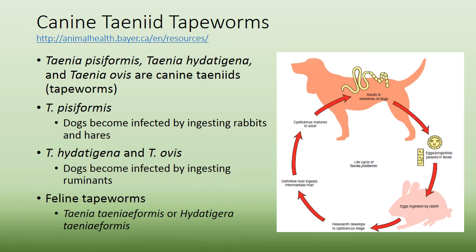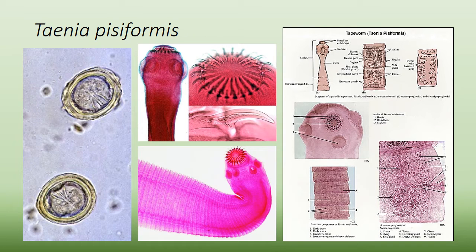As for Taenia, there are different types. The intermediate host is typically a rodent — for example, Taenia pisiformis uses the rabbit, and there are others for ruminants and one specifically for cats. The intermediate host is usually a mouse or rat. Microscopically, this is what the eggs look like within the proglottid, and you can see the suckers on the mouth of the tapeworm.